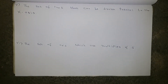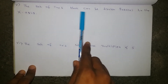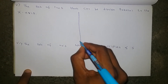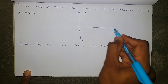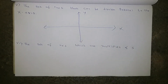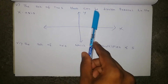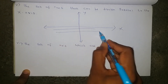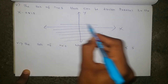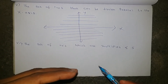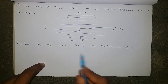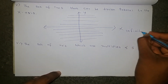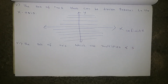Next question: the set of lines that can be drawn parallel to the x-axis. We know this is the y-axis and this is the x-axis — the horizontal line. He is asking for lines parallel to the x-axis. We can draw one parallel line, another parallel line, and keep on drawing infinitely. So infinite parallel lines can be drawn to the x-axis, making this an infinite set.